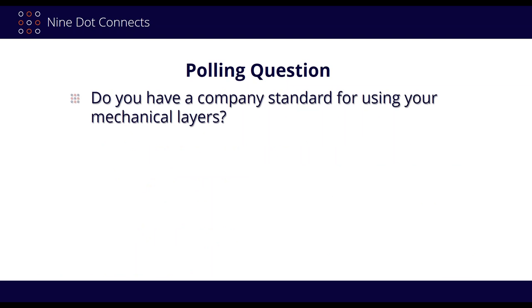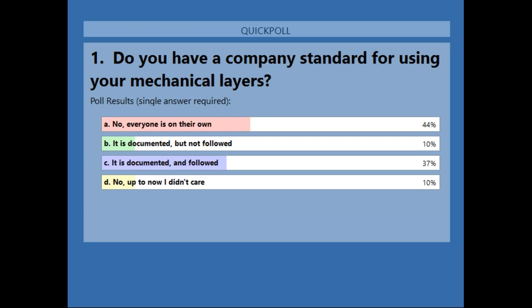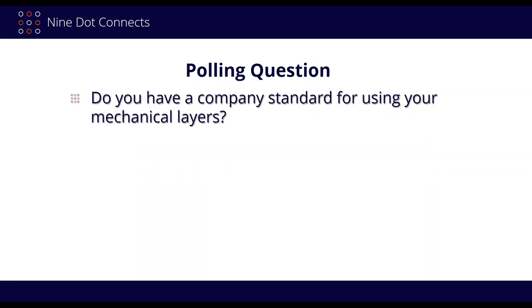I have a quick polling question: do you have a company standard for your mechanical layers? The poll results show 44% say no, everybody's on their own. 10% say it's documented but not followed. 37% say it is documented and followed — so only about one third have it documented and are actually following it. And 10% said they've never really cared about mechanical layers but figured they'd find out what you can do with them. Some interesting statistics.